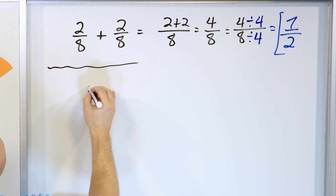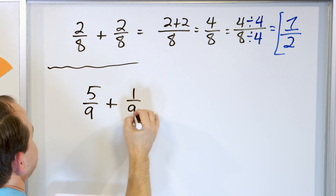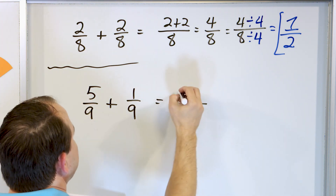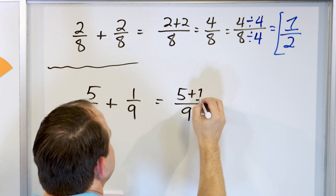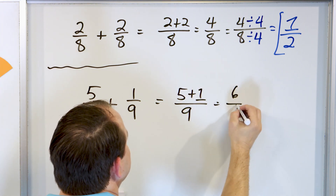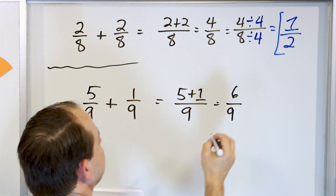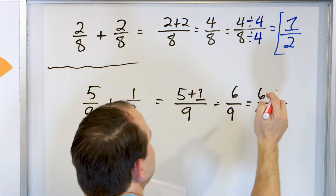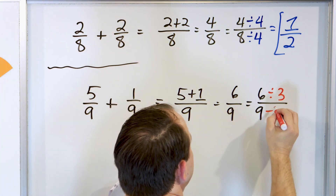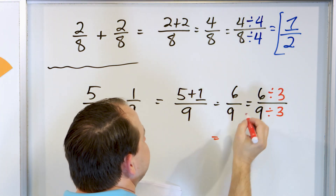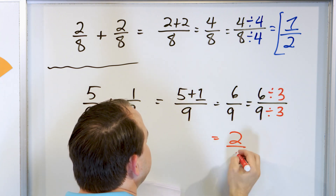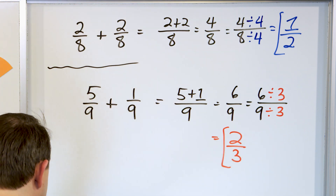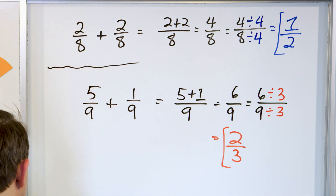With five-ninths, add to it one-ninth. The denominator is the same, so it just stays in the final answer. Then we have five plus one, which is six-ninths. Can we simplify this? Yes — we can divide top and bottom by three. Six divided by three is two, and nine divided by three is three. Now this is fully simplified — I cannot make that any simpler. So the answer to this addition problem is two-thirds.